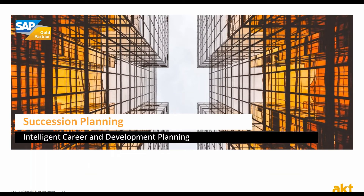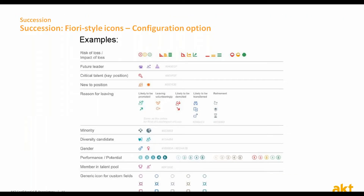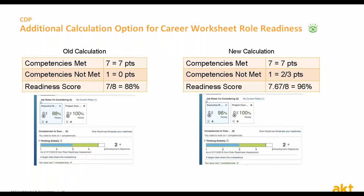Moving on to succession management — SuccessFactors really likes icons. There is now a Fiori-style icon set redesigned for most commonly used fields in various succession planning screens like the succession org chart, matrix grid reports, and talent cards. Additionally, the role readiness score on the career worksheet was always calculated based on competency expected rating, where each expected rating met is worth one point and each not met is worth zero. As requested by several customers, SuccessFactors now offers an option to choose proportional calculation instead, in which each competency rating is weighted as a percentage of the expected rating total.